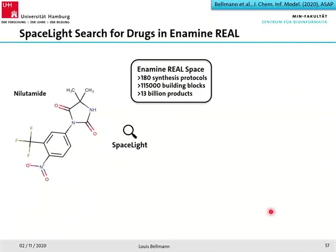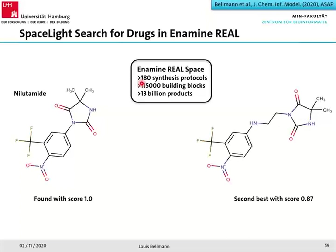Now let me show some things you can do with SpaceLight. We search again in the full Enamine REAL Space and use naproxen — an approved drug — as a query. We find a product with score 1.0, meaning this compound is contained in the Enamine REAL Space, which means you can order it from Enamine. This shows you can check the presence or absence of a certain query in these very large chemical spaces. The second-best result with score 0.87 shows the substructure-driven character — shared substructures are identical while the middle part differs slightly.